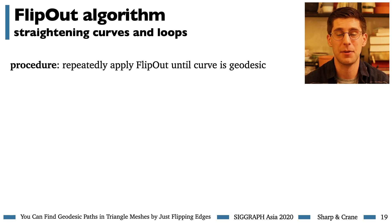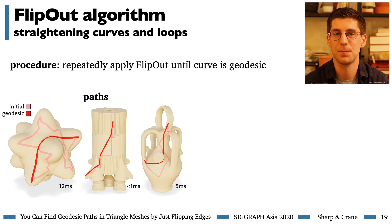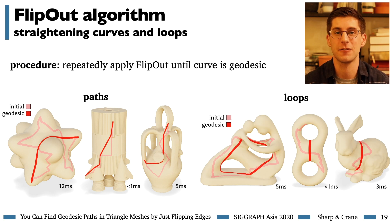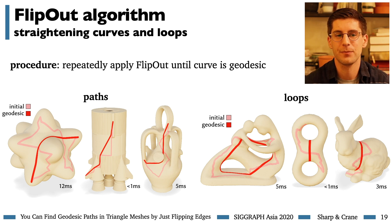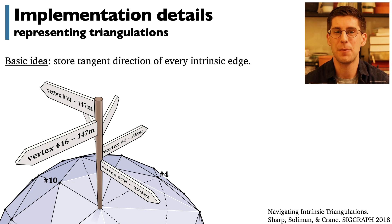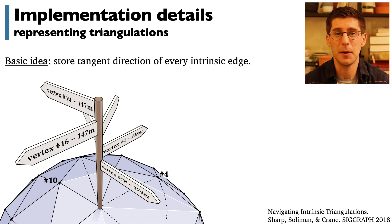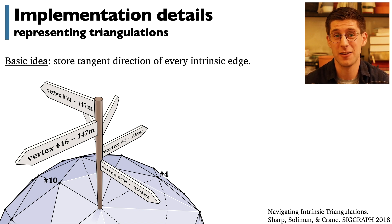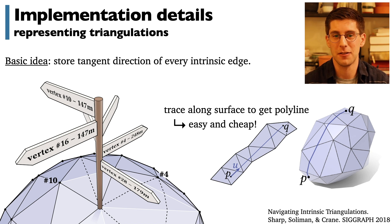Once we have this basic subroutine, we apply it repeatedly until any curve of interest is a geodesic. This works for paths as well as for loops on surfaces — for loops there's one small extra case, but I'll refer you to the paper for details. Although a purely intrinsic representation is sufficient for many applications, we'll often want to output a geodesic as a polyline across the surface, for instance to visualize it. In that case, we use the signpost data structure, which tracks both the length and direction of each edge. At the end, we trace out the edge to recover the actual path the geodesic takes across the surface — a fast and cheap operation.